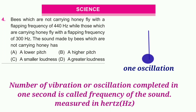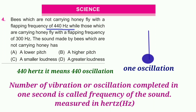Frequency is measured in hertz. One vibration per second is one hertz; 10 vibrations per second is 10 hertz. A honey bee moves its wings up and down — it oscillates its wings. 440 hertz means 440 oscillations per second, so this is the frequency of the sound made by the honey bee.